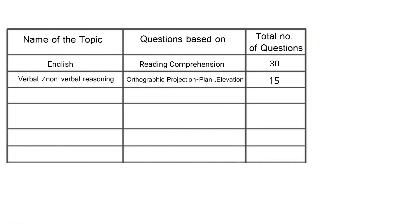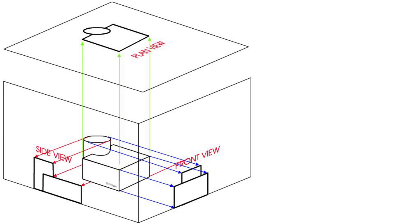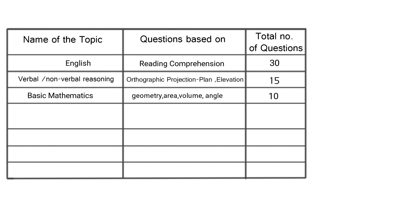There were also 15 questions from verbal and non-verbal reasoning, including orthographic projections — where they give you a 3D image and you have to find the plan, elevation, and sides of the 3D object, and vice versa. They also included basic mathematics questions with geometry, area, volume, and angles, which are not comparable to the Class 12 board syllabus because the questions were pretty basic.